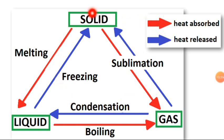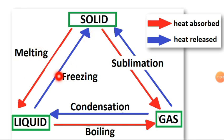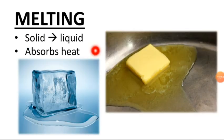As you can see in this figure, the color of the arrows is red and blue. The red arrow means that heat is absorbed, so the process is absorbing heat — for example, solid to liquid. Blue color means heat is released. This applies to all the processes shown.